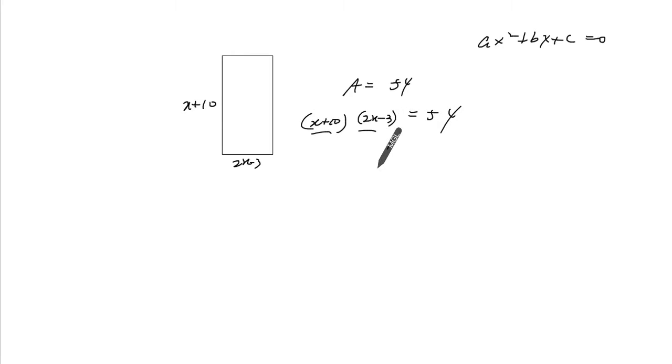I'm going to go through the traditional method, expand this, so we get 2x squared minus 3x plus 20x minus 30 equals 54. 2x squared, you get plus 17x. If you add these two, you get minus 84.